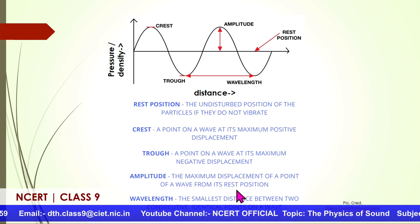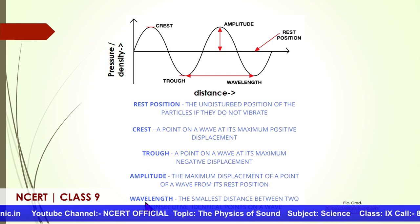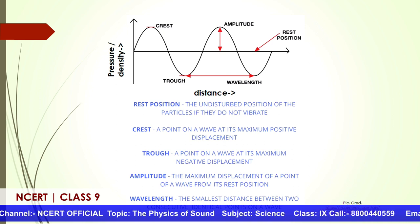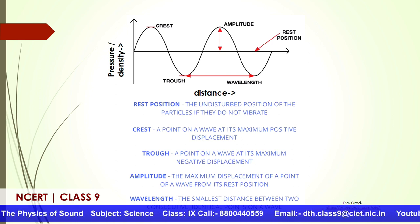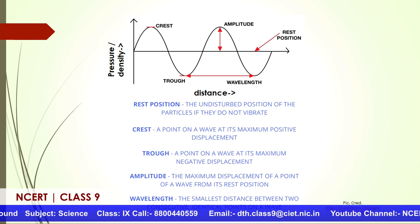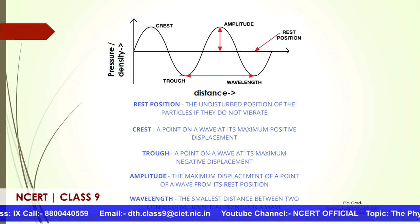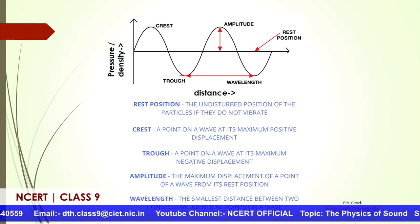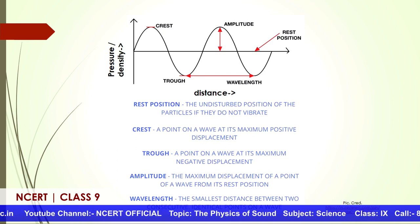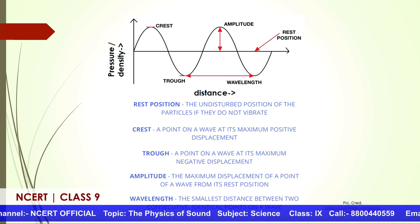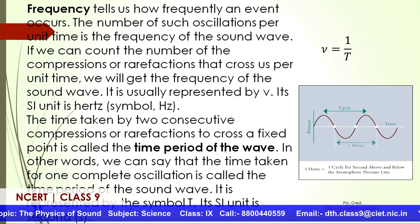Amplitude is the maximum displacement of a point of a wave from its rest position. Then what is wavelength? Wavelength is the separation between two crests or two troughs — the distance a wave needs to travel from one compression to the next. Wavelength is periodicity in space. A wave has double periodicity: one in space which is wavelength, and one in time which is time period and frequency, because both are related.